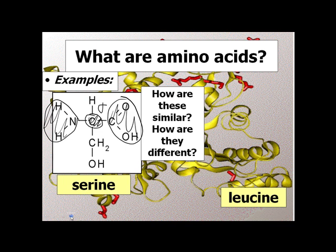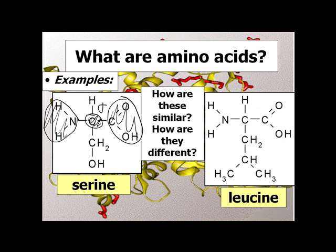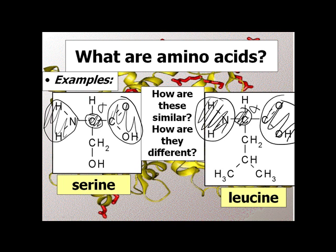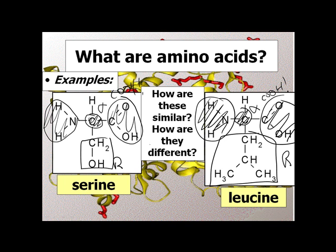Let's look at leucine at the same time so we can compare them. We've got our amino group, our alpha carbon, the amino group, and the carboxylic acid group — COO. Now what's different is the R group hanging off the bottom. That's the stuff down the bottom. Clearly, that one looks different from that one. So the 20 different flavors — or the 20 different letters of your cell's alphabet — are made up by changing the R group.